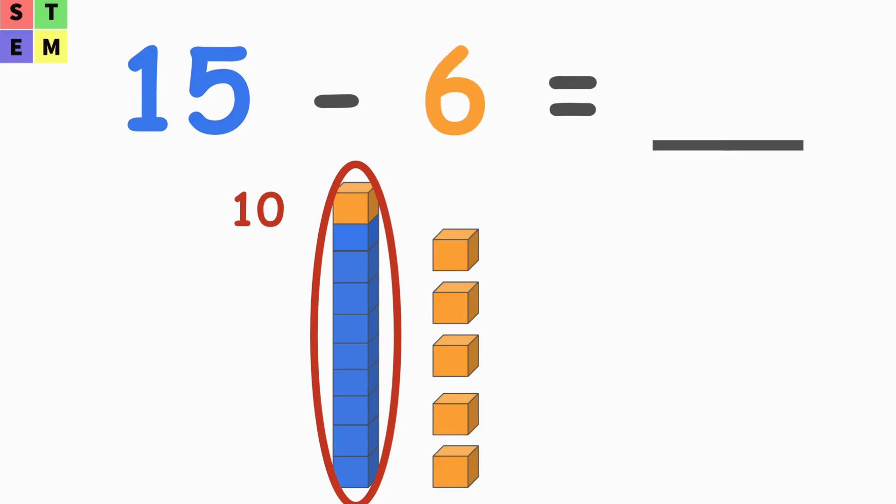So we've got here 15 minus 6. Again, I marked six blocks as orange blocks. Take a look at the blocks below. So we totally again got 15 blocks. We got 10 here with nine blue blocks and one orange block, which totally equals 10.